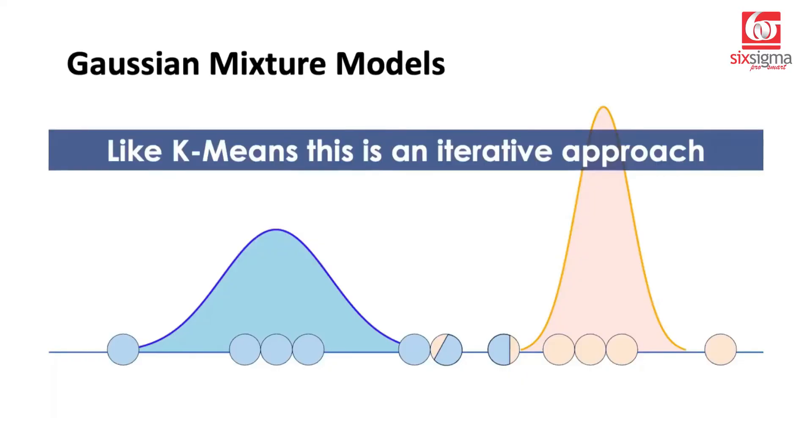So once again, to summarize, what is the similarity between Gaussian mixture models and k-means clustering? Just like k-means clustering, this is also an iterative approach. In k-means, we iteratively determine the centroid till we finally converged. Here, we iteratively determine the mean and the variance. And this is applicable only when we are dealing with one-dimensional data.